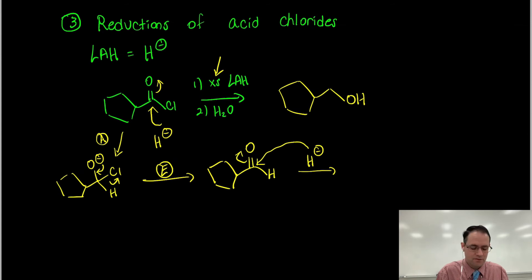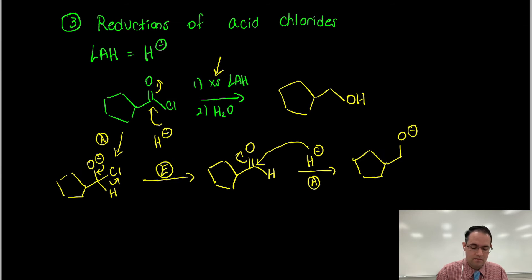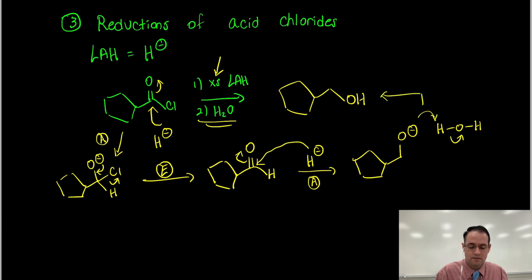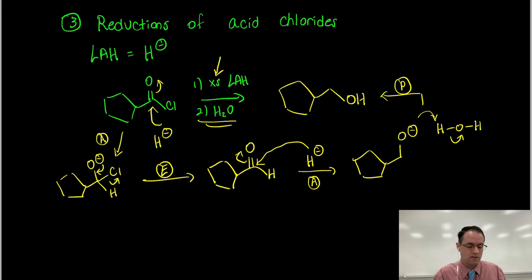Remember that aldehydes can also react with hydride. This is an addition reaction - hydride adds and you form the alkoxide. It sits there until step two when you add a large excess of water, which reacts to form the alcohol via protonation of the alkoxide. So we have AE then AP - AE is the new stuff, AP is the old stuff.